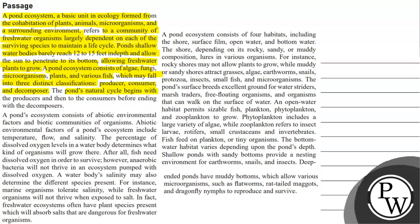The pond's natural cycle begins with the producers and then to the consumers before ending with the decomposers. A pond's ecosystem consists of abiotic environmental factors and biotic communities of organisms. Abiotic environmental factors of a pond ecosystem include temperature, flow and salinity.